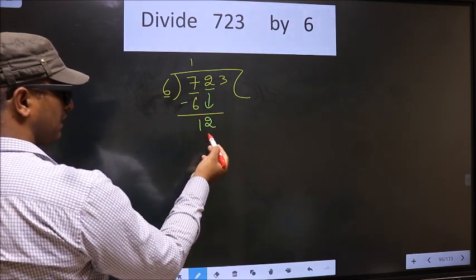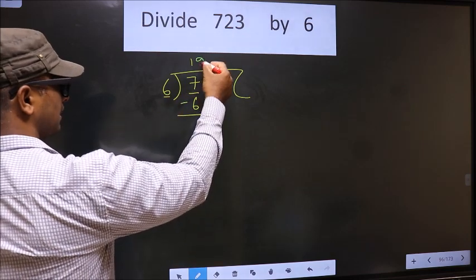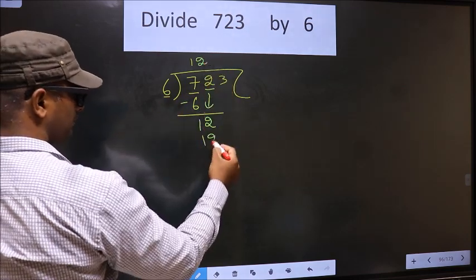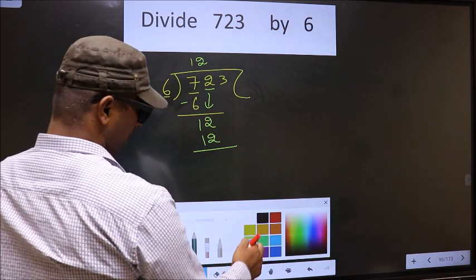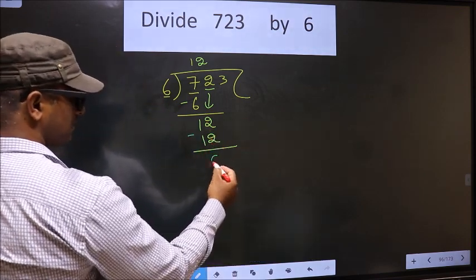Here we have 12. When do we get 12 in the 6 table? 6 twos, 12. Now you subtract: 12 minus 12, 0.